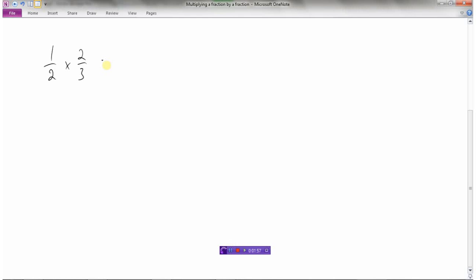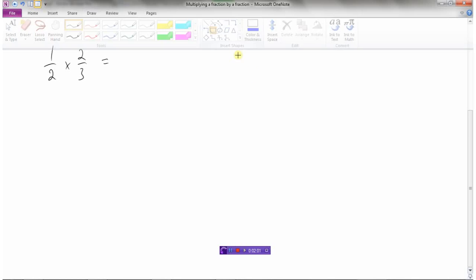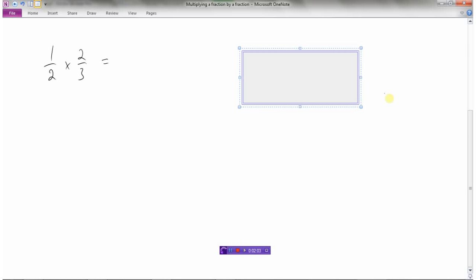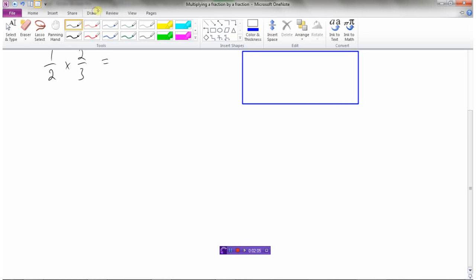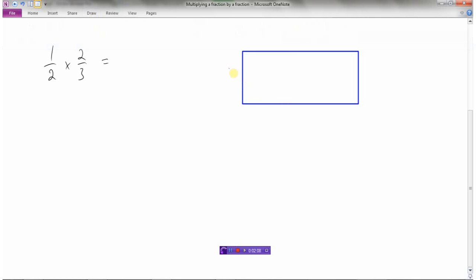And now what if it was one-half times two-thirds? Well, let's draw a rectangle.